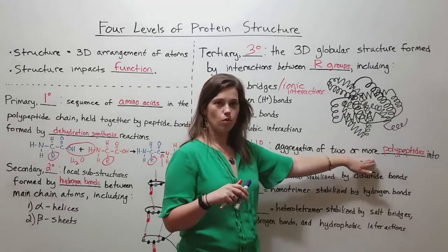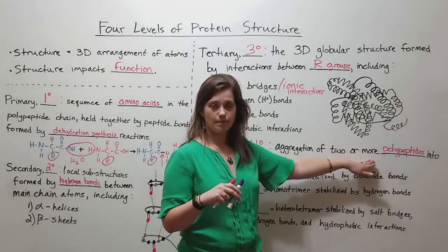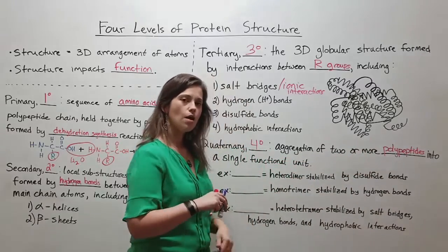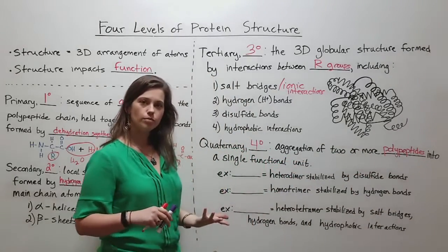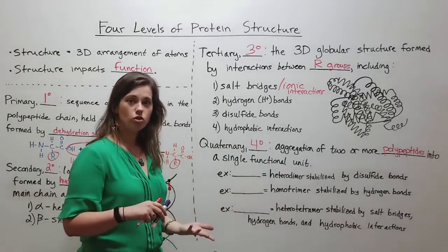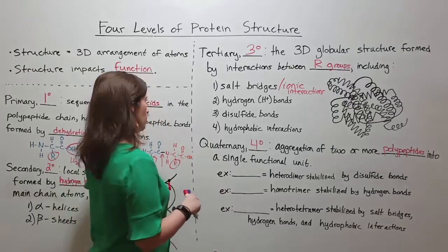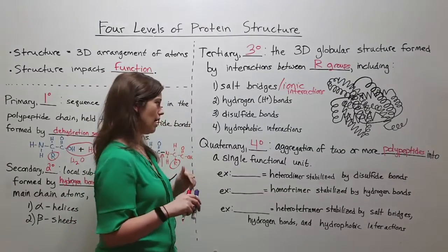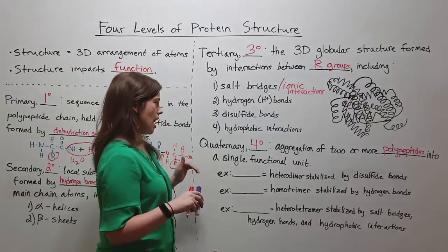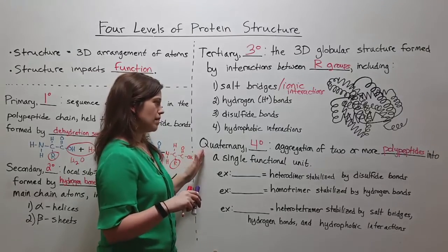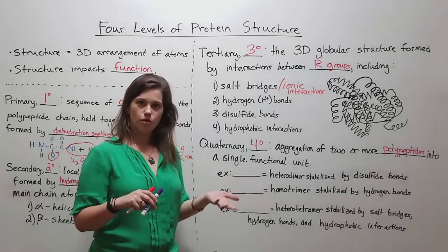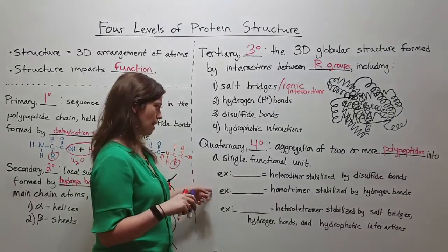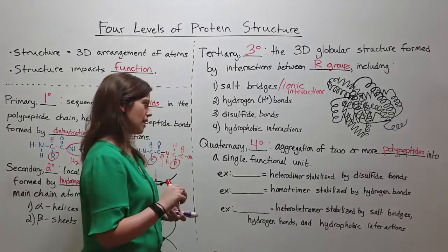They don't have more than one polypeptide, and so they don't have quaternary structure. However, many important proteins do have quaternary structure on top of the primary, secondary, and tertiary structures that they all have. This is because many proteins are comprised of more than one polypeptide. Let's talk about three examples of that.